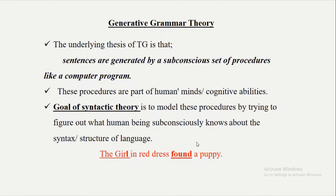For example: 'The girl in the red dress found a puppy.' Here, how can we understand that 'the girl' is a noun phrase and 'found a puppy' is a verb phrase? The purpose of generative grammar is not only to generate grammatically correct sentences but also to help understand how the syntax or syntactic structure of language is. The structure of language is the concern of generative grammar theory.